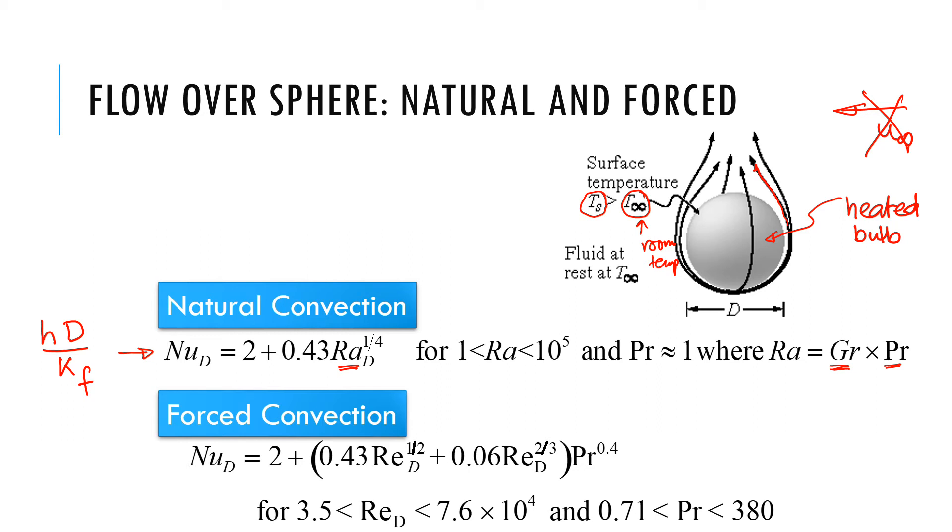Like any other correlation, there's a range over which this is valid. This Rayleigh number (Grashoff times Prandtl) has to be less than 10 to the 5 to be able to use this equation because those are the conditions for which it was done. Also, Prandtl number needs to be close to 1, which is the case for air. You notice that D, not unexpectedly, is the characteristic length for a sphere.